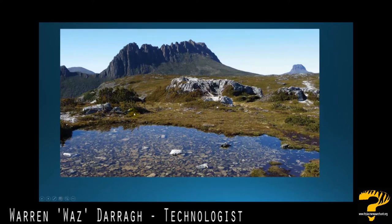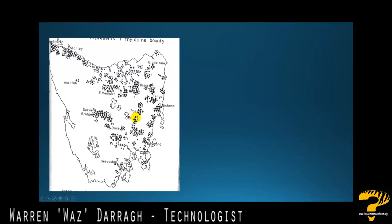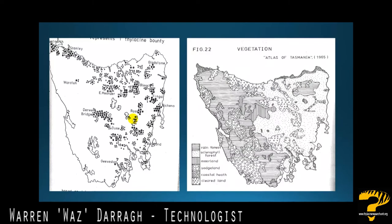Very picturesque and beautiful place in Tasmania. This map here shows where all of the bounties were paid from the late 1800s up until 1932. The bigger the dot, the more thylacines were actually taken in that area. The next map is the actual vegetation map of Tasmania, 1965. Both of these maps are taken from the 1980 World Wildlife Federation report by Steve Smith — one of the renowned scientific investigations on whether the thylacine was extant or not.